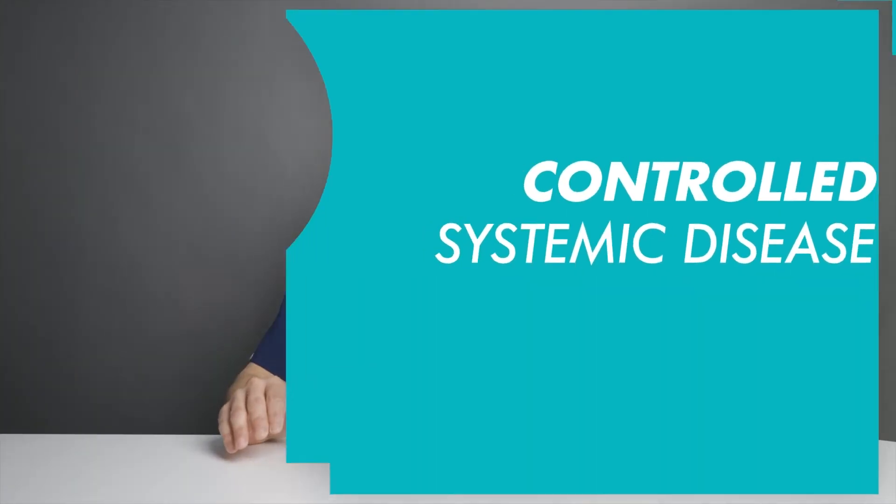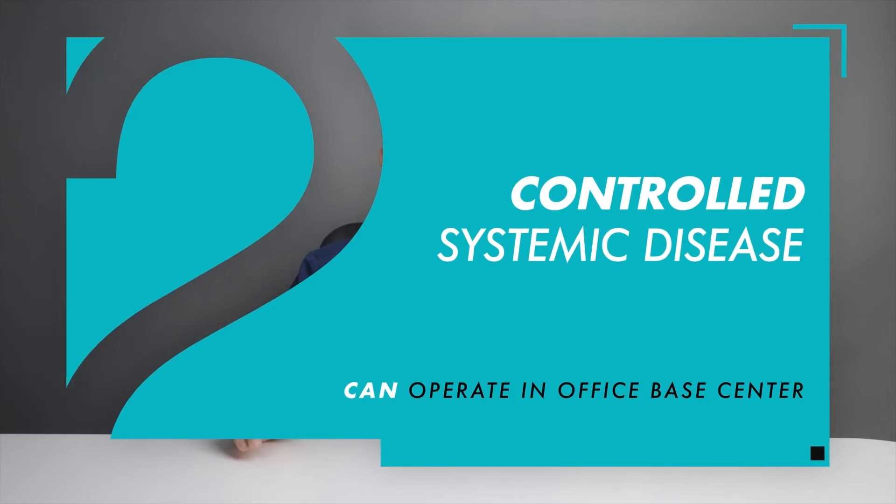An ASA 2 patient may have a controlled systemic disease that is not life-threatening. For example, someone that has high blood pressure but takes medication and it's well controlled, or they're diabetic and they take their diabetes medication and it's well controlled.